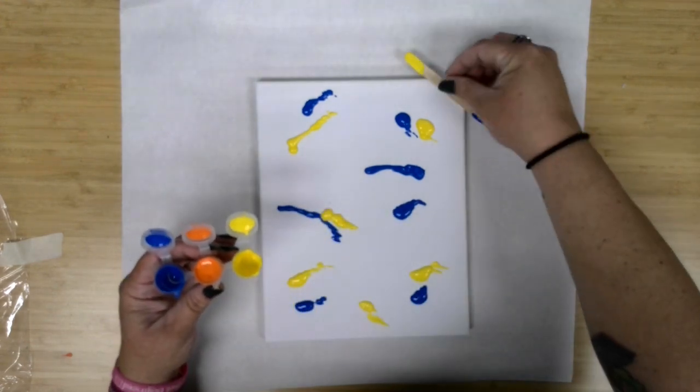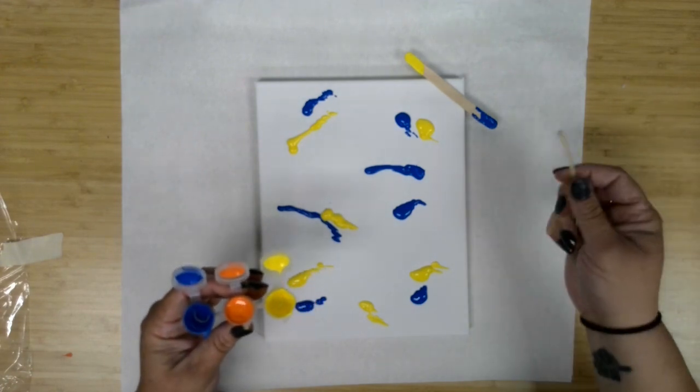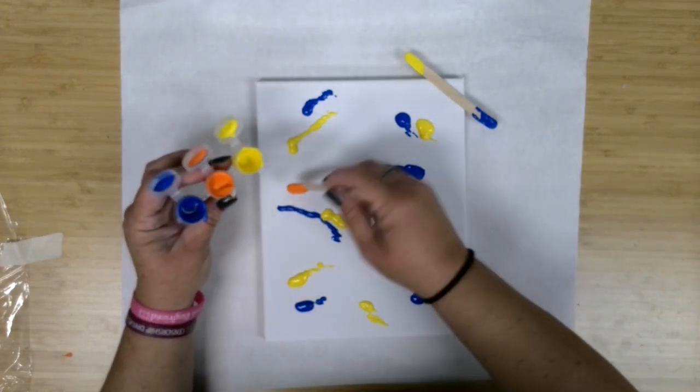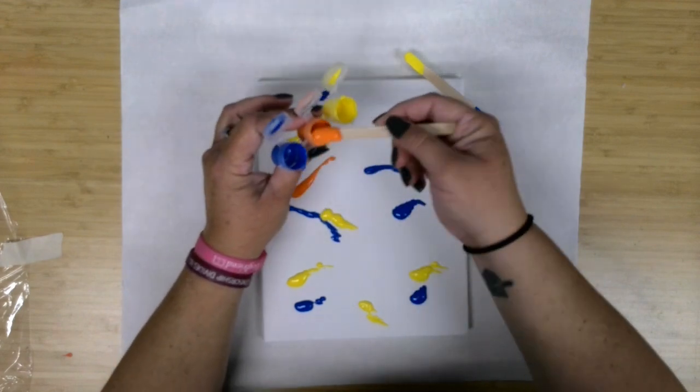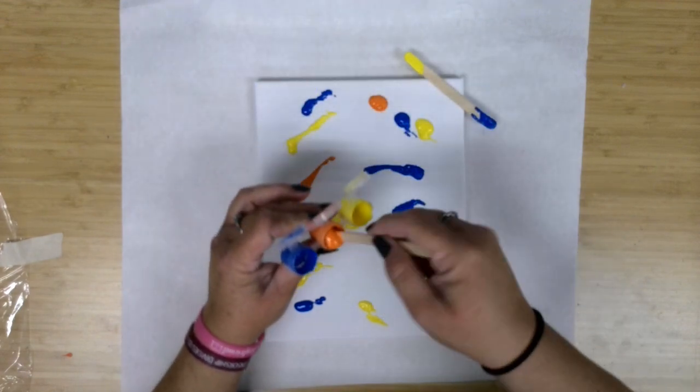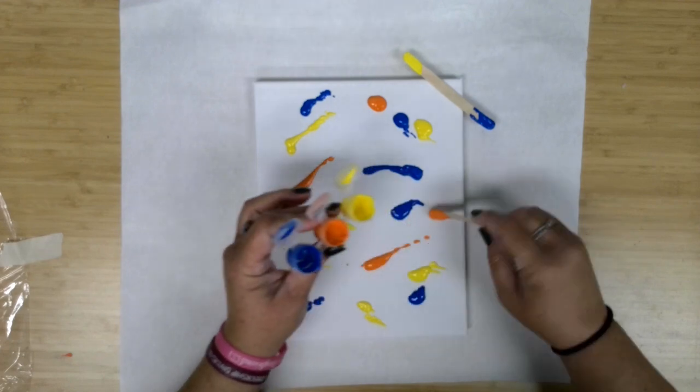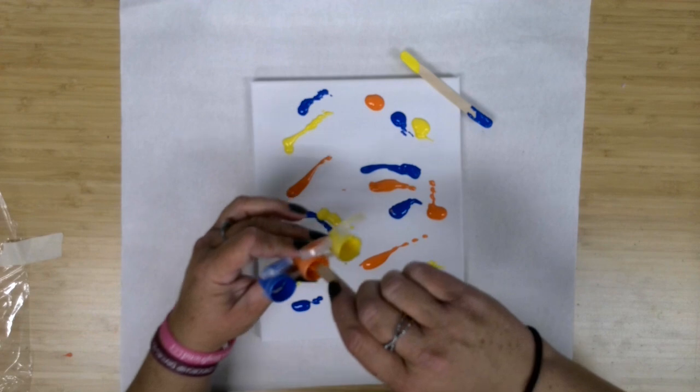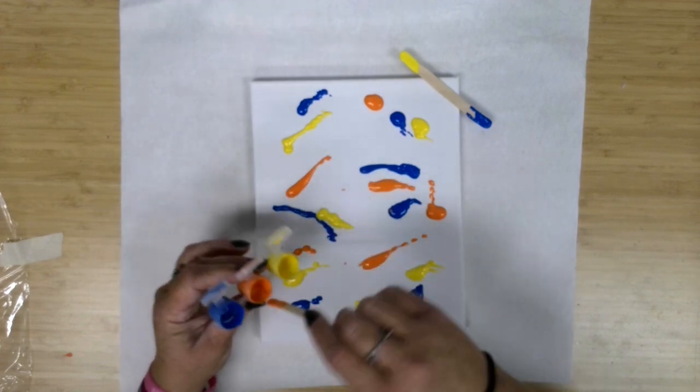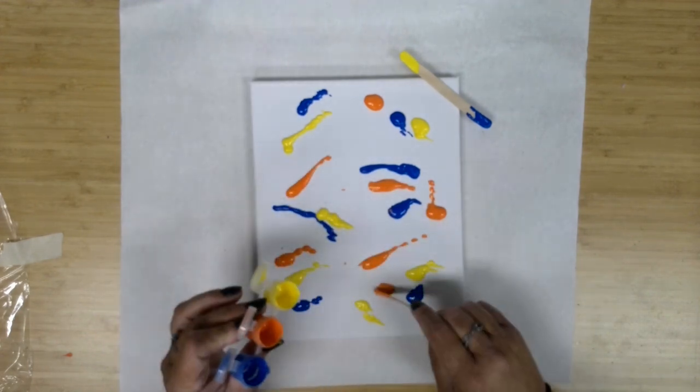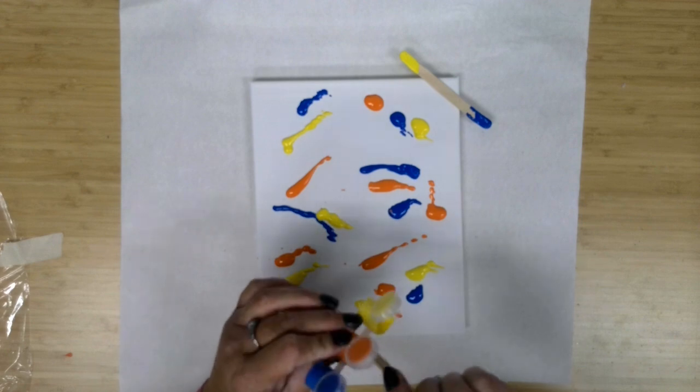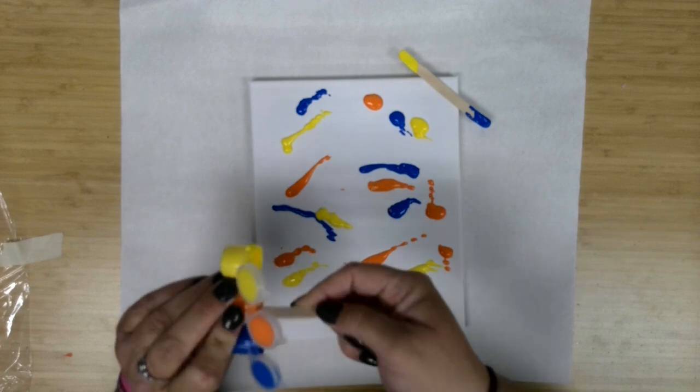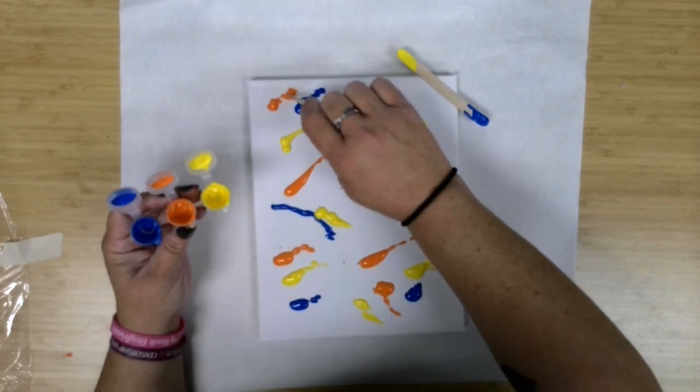And I do have an extra craft stick one that didn't quite make it into one of the bags. So I'm going to use this guy and I'm going to come in with my orange everywhere. So I'm really using the craft stick to kind of scrape the sides.